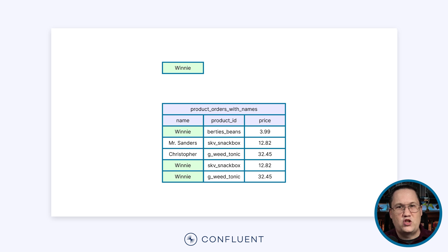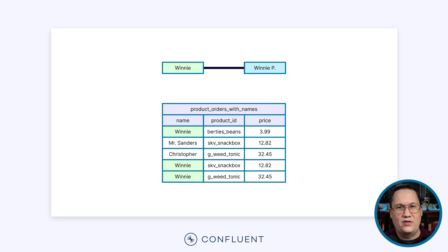Keeping these records means the state of a Flink job can grow quite large if we aren't careful. Furthermore, sometimes we join streams that include upserts or retractions. When we perform an update to a record with many corresponding entries in the results table, it can cause a cascading update to all of those records — a complicated and expensive operation. Because of these complexities, we must be careful when using basic joins. They are best used where the table sizes are limited and we don't have to worry about the state growing out of control.